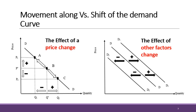On the other hand, if any factor other than the price of the good changes, the whole demand will change. At each and every price, the consumer is willing to buy a different quantity, which constitutes a new demand curve — shifting to the right if demand increases, and to the left if demand decreases. We have now completed our review of the demand side of the market. See you in the next lecture.